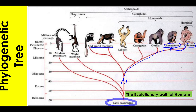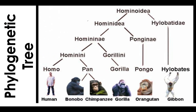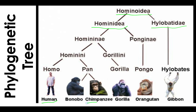If we look at the order of Primates, it includes the superfamily Hominoidea. This superfamily is divided into two families: the Hominidae and the Hilobatidae. The family Hominidae is divided into two subfamilies — the Homininae and the Ponginae. The human, the chimpanzee, and the gorilla all belong to the family Hominidae, while the orangutan is part of the Ponginae subfamily. The Hilobatidae includes the gibbons.